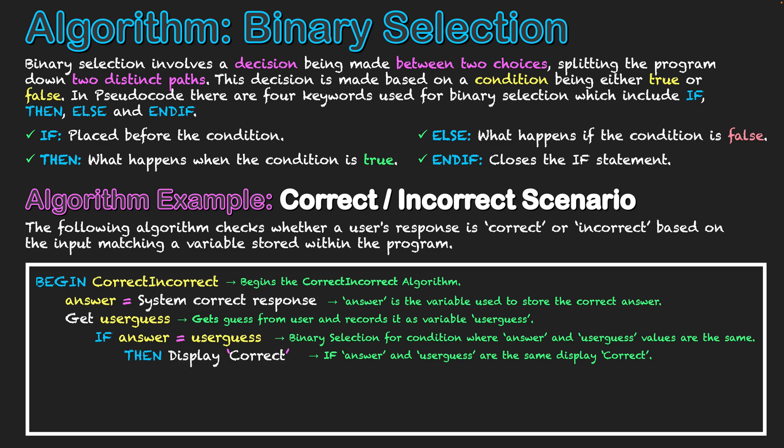If they do not match, we then go to our else keyword. It's going to display incorrect because the two values do not match, and they are not the same. So incorrect will be displayed on screen because the user's obviously written the wrong answer.